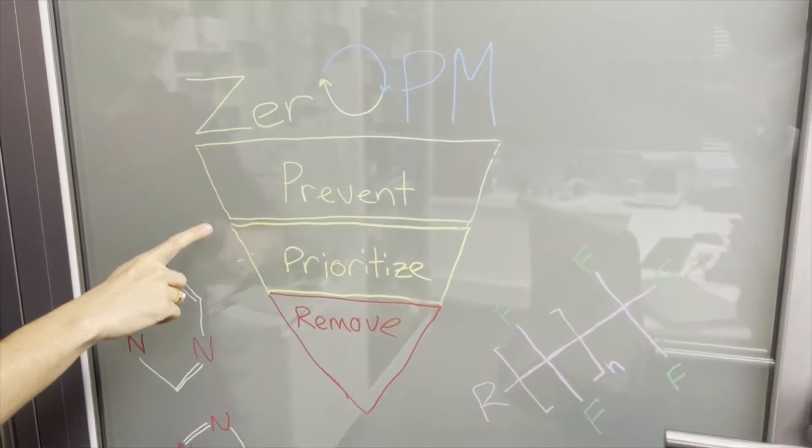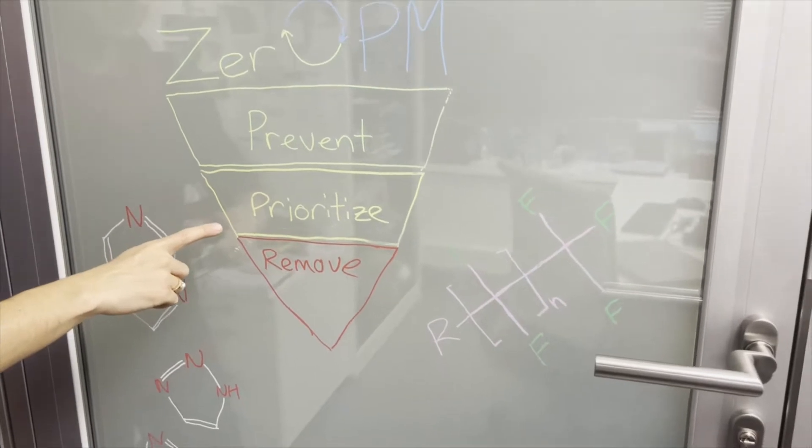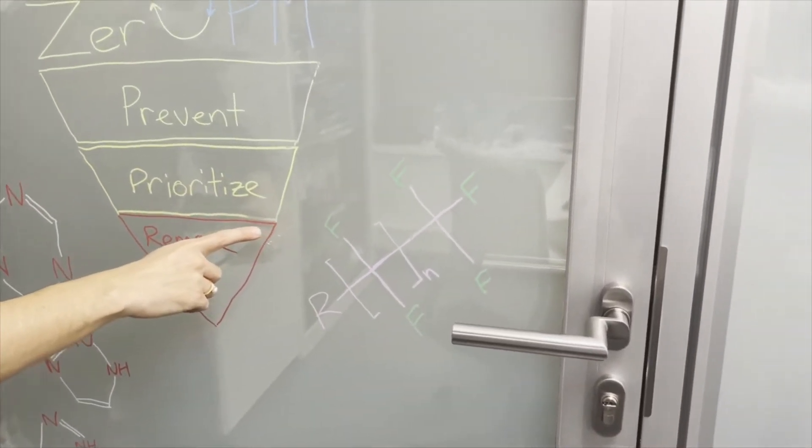In ZeroPM, we're in work package five, Substance Grouping, looking at prioritizing the millions of chemicals we have in the chemical registries.